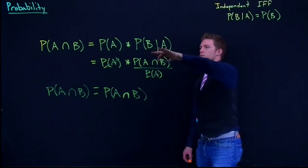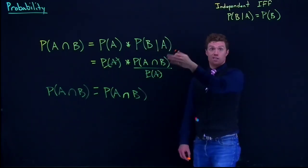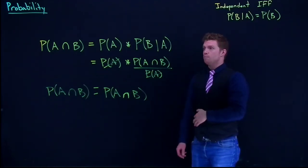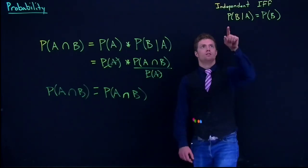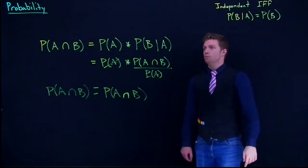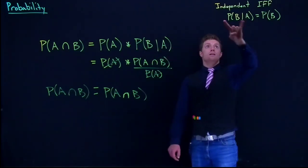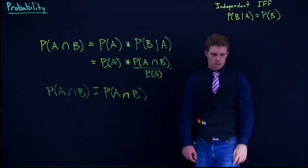And that'll give you the intersection. It works, but it's really handy with independent events, because what we can do is replace this B given A if it's independent.